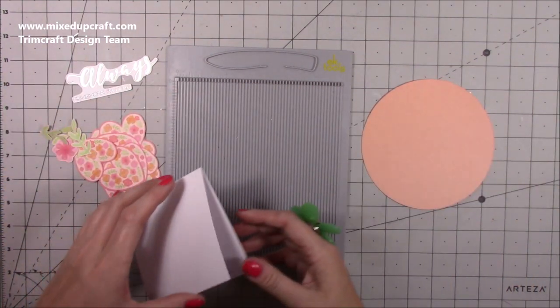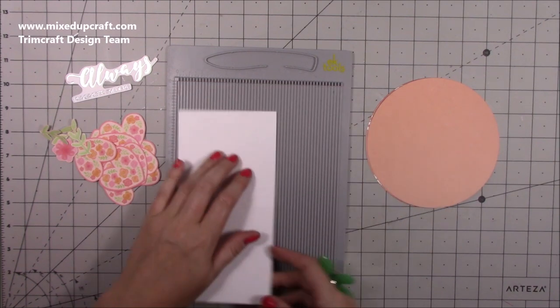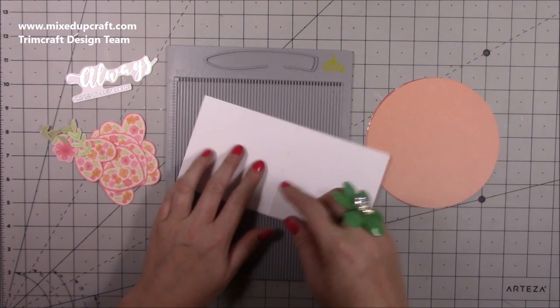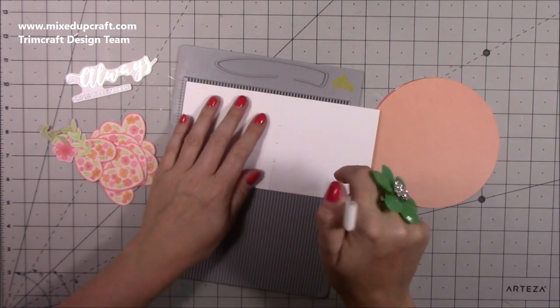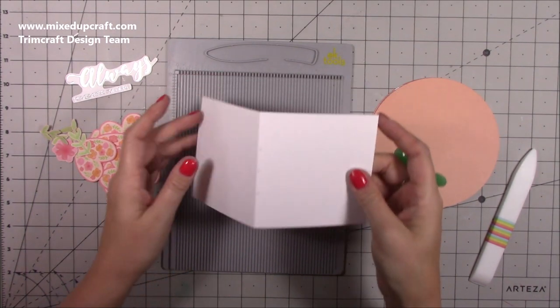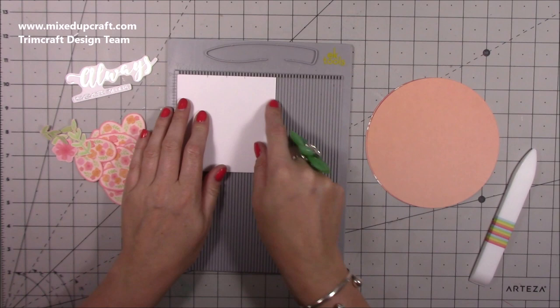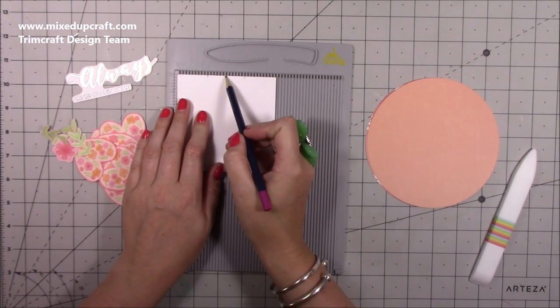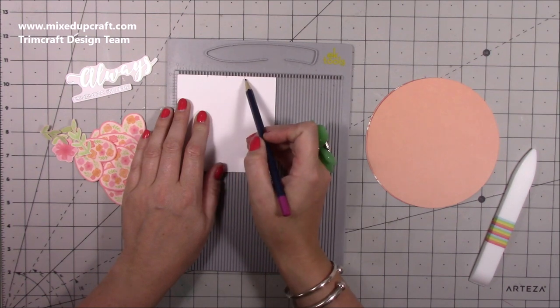So quite plain, but once I add the hearts and everything it's going to all come together. For the base, you want a piece that's eight by four. I've got my mini scoreboard out here, but along the eight inch side you just want to score at four inches. Again, if you want to make it bigger you can once you see how to make it, it's very straightforward. So just fold and burnish that piece.